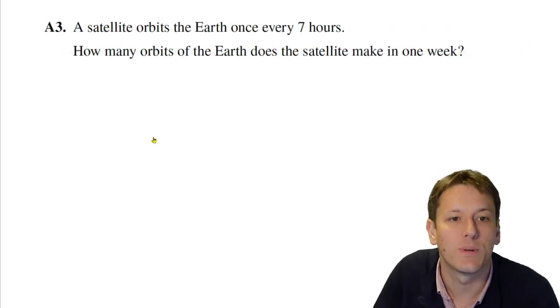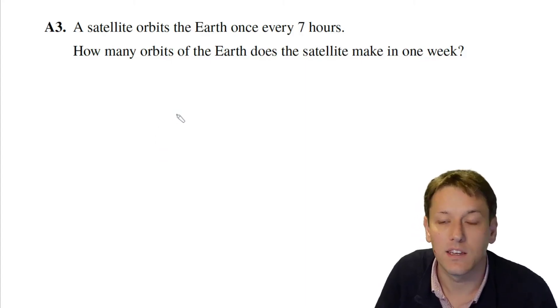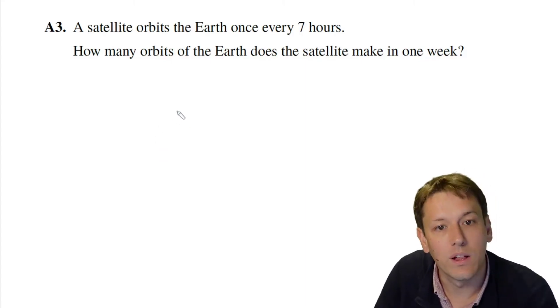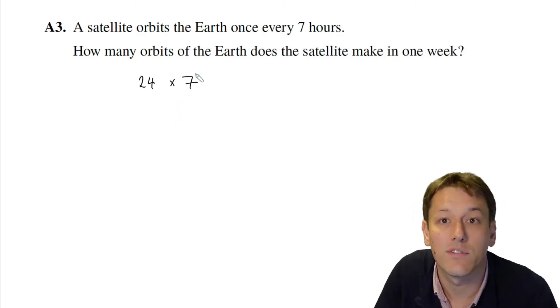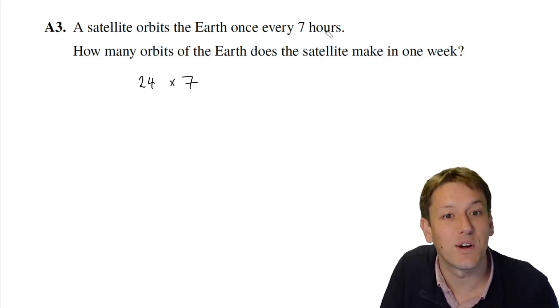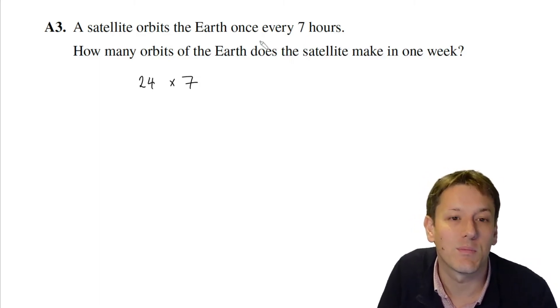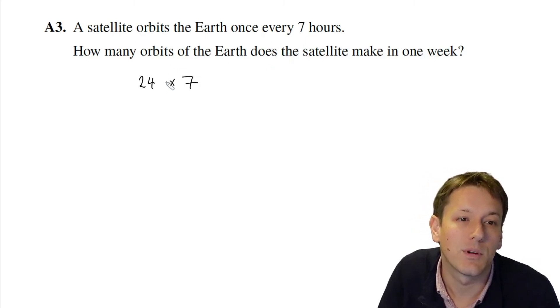A satellite orbits the earth once every 7 hours. How many orbits of the earth does the satellite make in one week? Well, in one week there will be 24 hours in a day times 7 days. So you could work out how many hours there are and then divide it by 7 to work out how many orbits of the earth it will make.